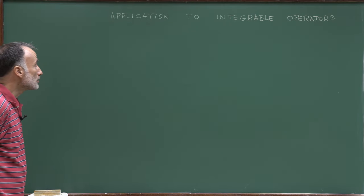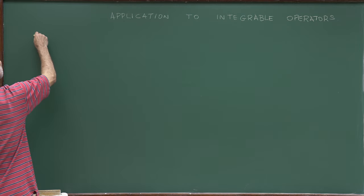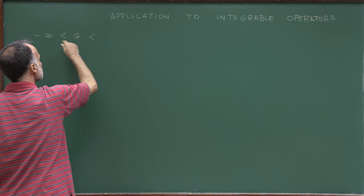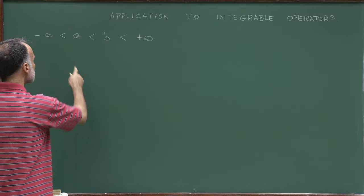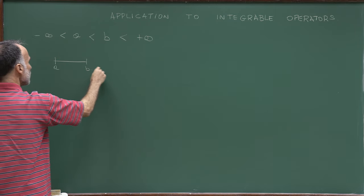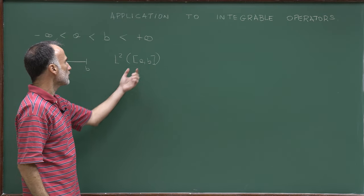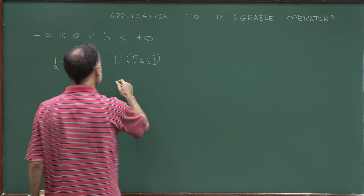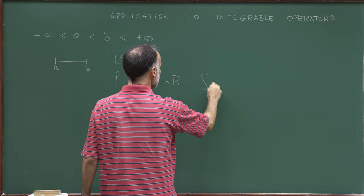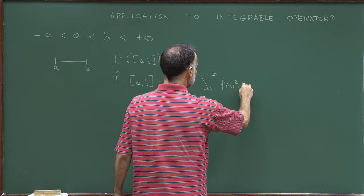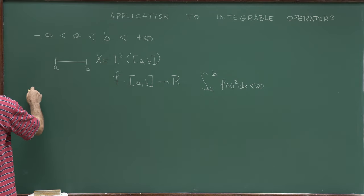In this lecture, I will give an application of the previous results by studying integrable operators. We fix a and b, with a strictly larger than minus infinity, smaller than b, smaller than plus infinity. We look at the interval (a,b) and consider the space L2(a,b) — the functions defined on the interval (a,b) taking real values whose square is integrable. This is our space X, and X is a Hilbert space.